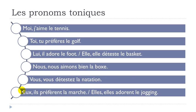Now the last two examples — masculine and feminine. The masculine: EUX, ils préfèrent la marche. 'La marche' comes from the verb 'marcher', meaning 'to walk'. EUX, ils préfèrent la marche. And the feminine: ELLES, elles adorent le jogging. ELLES, elles adorent le jogging.